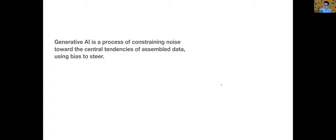Today, we use a different system. We use something called diffusion models, which is an evolution of generative adversarial networks. But the fundamental relationship between data and images remains the same. And I want to start with this statement, which we'll use to navigate through this presentation. Generative AI is a process of constraining noise toward the central tendencies of assembled data using bias to steer. We will hopefully unpack this through a series of examples over the next hour. And by the end, I hope this will become intuitive.